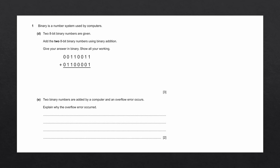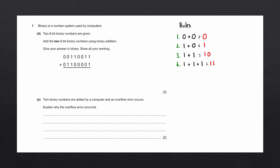Question D. Two 8-bit binary numbers are given. Add the two 8-bit binary numbers using binary addition, give your answer in binary, show all your working. To add two binary numbers we follow four basic rules: 0 + 0 = 0; 1 + 0 = 1; 1 + 1 = 10; and 1 + 1 + 1 = 11. When adding two 8-bit binary numbers, we start on the right and add each digit.